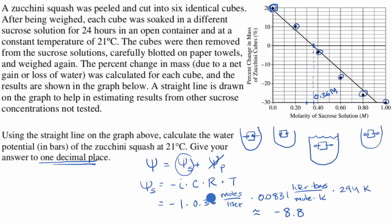Negative 8.8, and the units work out as well. Moles cancel with moles, liters cancel with liters, Kelvin cancels with Kelvin, and we're just left with negative 8.8 bars. And we are done.